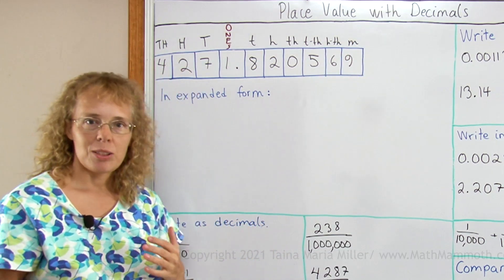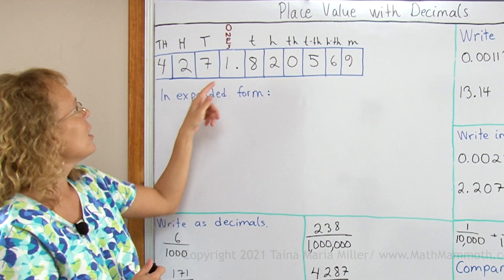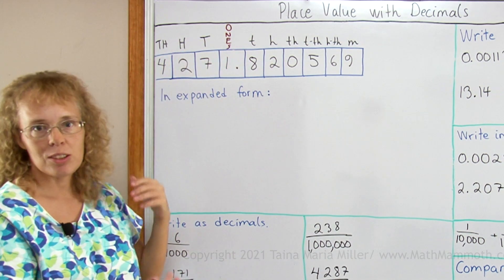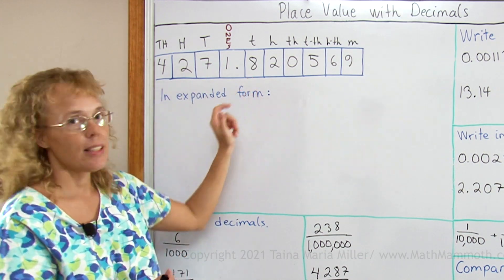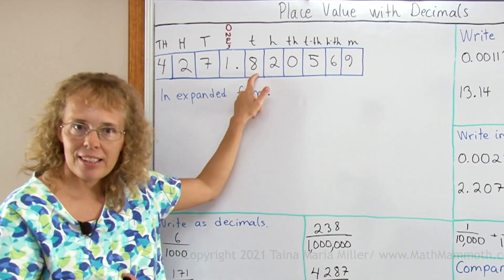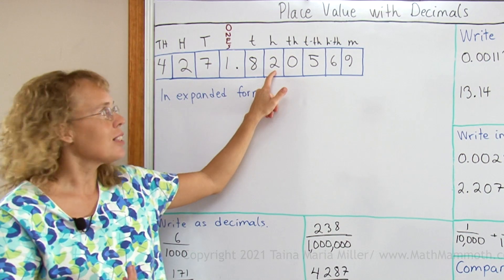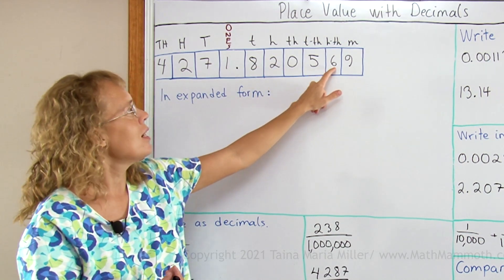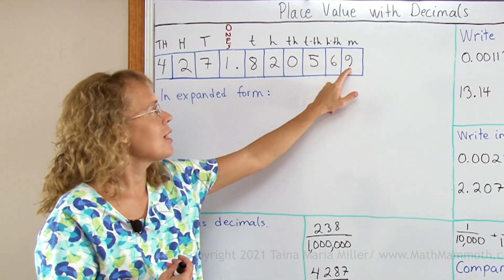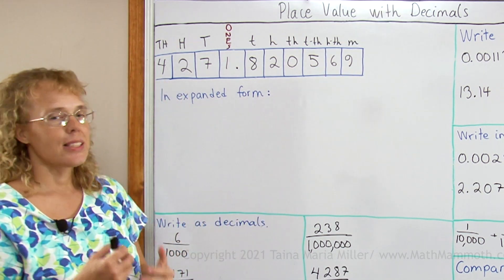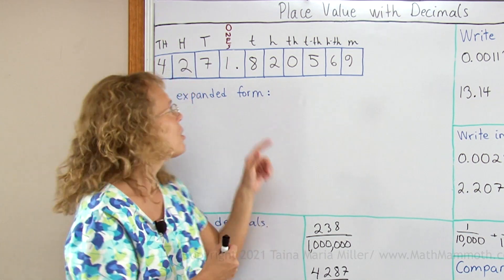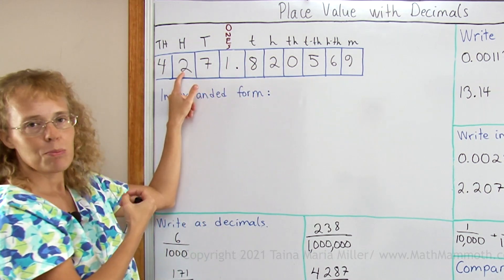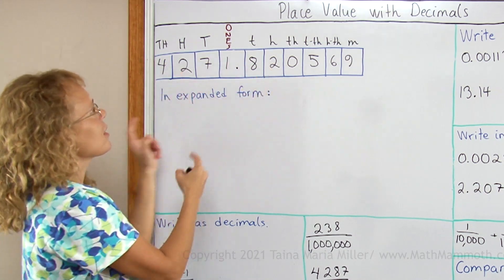Notice how these different places go — how they are organized. Here's, as you know, the ones place, tens, hundreds, and thousands place in the whole number part. And then in the decimal part we start with tenths, then hundredths, then thousandths. Next is ten-thousandths place, hundred-thousandths place, and millionths place. So the places are symmetrical around the ones place, so that you have tens here and tenths place here, hundreds place and hundredths place, and so on.